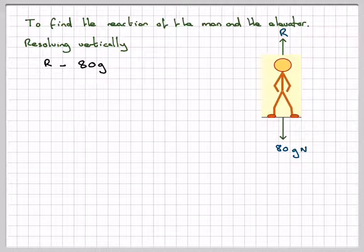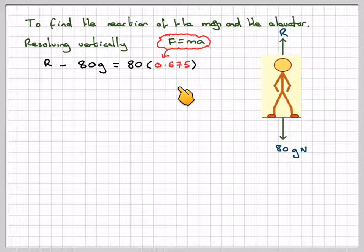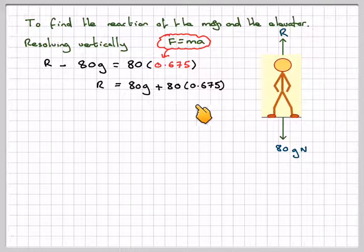R minus 80g equals the mass, which is 80, times the acceleration, which we calculated to be 0.675. So R equals 80g plus 80 times 0.675, which gives 838 newtons.